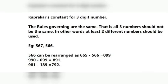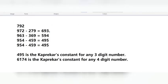Let's take the example of 566. Rearranged, 566 becomes 665 in descending order and 566 in ascending order. 665 minus 566 gives 099. Then 099 is written as 990 in descending order and 099 in ascending order. 990 minus 099 equals 891. Next, 891 in descending order is 981 and ascending order is 189. 981 minus 189 equals 792. Rearranging 792: descending order gives 972 and ascending order gives 279. 972 minus 279 gives 693.